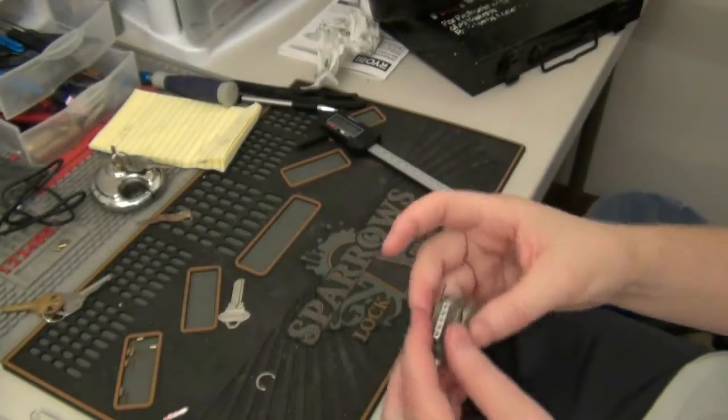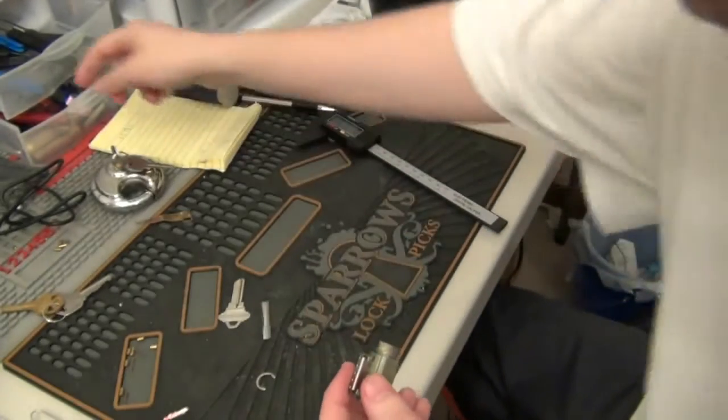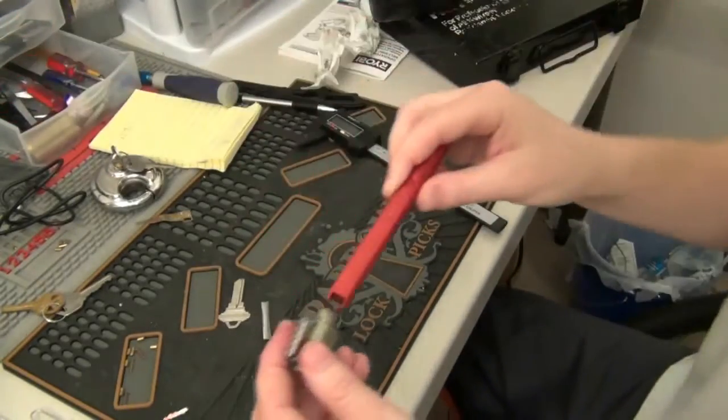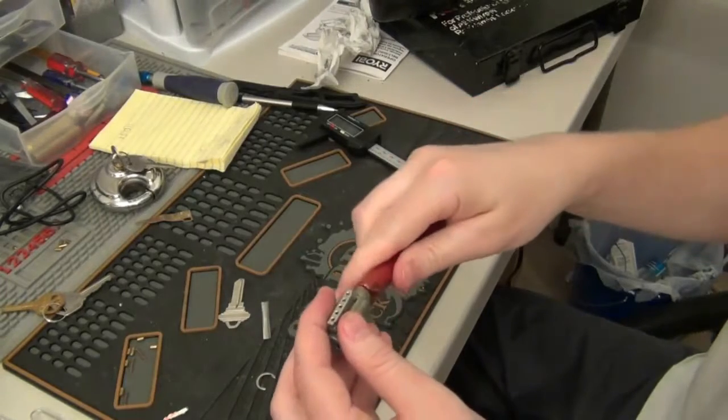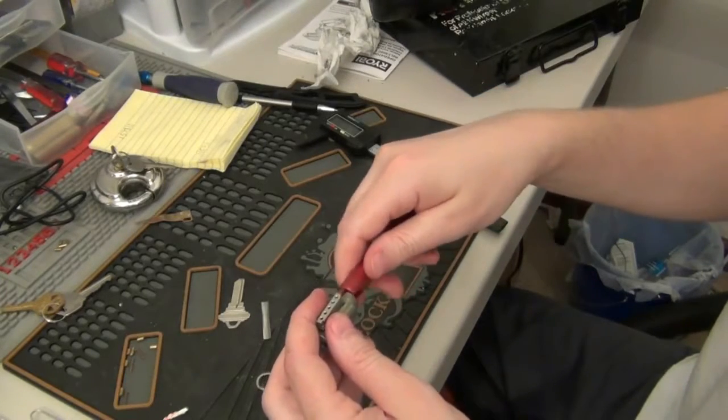So now that it's unlocked, you can pull the shim out, then you're able to move the plug and rekey it.